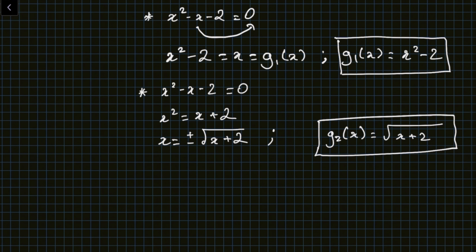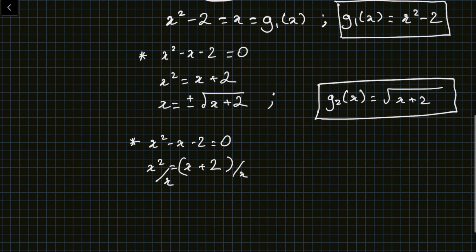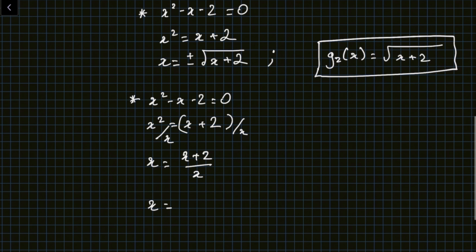We can exploit more options. Rewriting x² - x - 2 = 0 and dividing by x instead of applying a square root, I get x = (x + 2)/x, or in other words x = 1 + 2/x. This is g₃(x) = 1 + 2/x. So far we've got three g functions, each taking a completely different form.